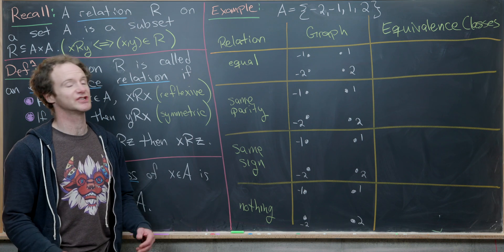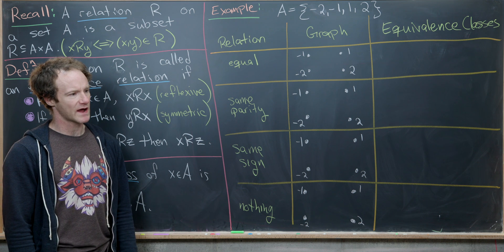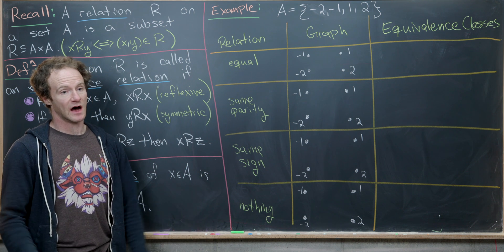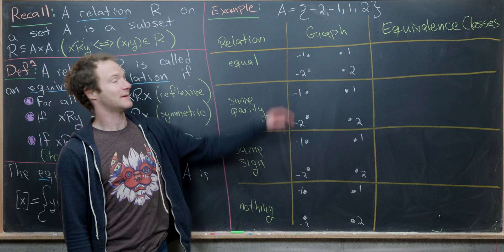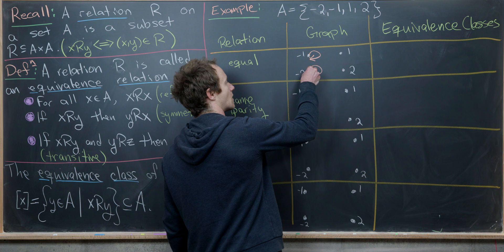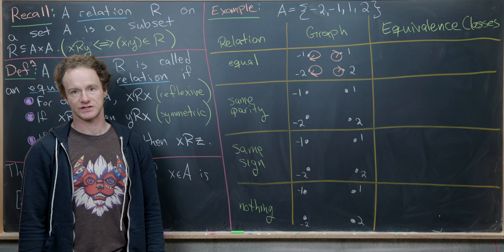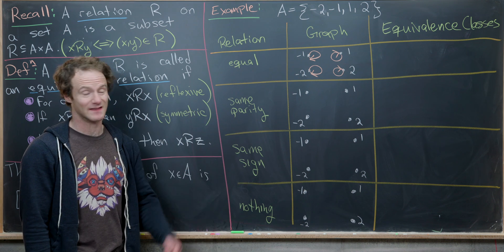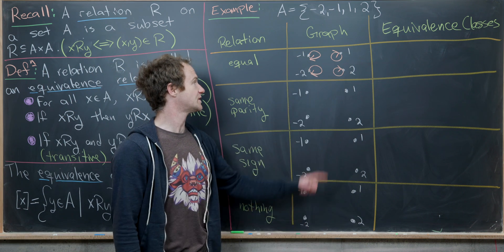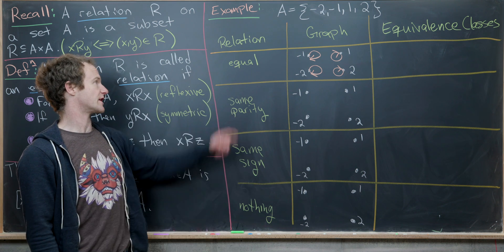The first equivalence relation is just equality. Equality is going to be an equivalence relation on any set, and in some ways it's one of the most boring — it's too fine of a filter. We can make a graph by putting directed arrows on all elements: negative one, negative two, one, and two, meaning each element is related to itself. There is no edge from negative one to two, and so on, because those are not related under equality.